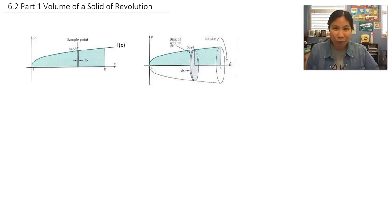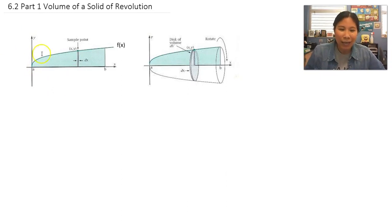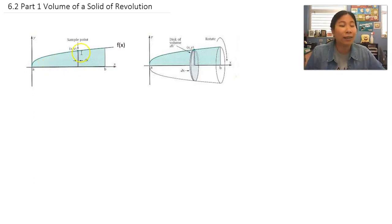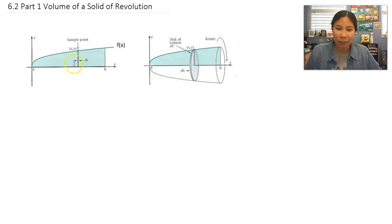A solid of revolution means we're creating this solid by doing revolutions — like rotations. I've included some pictures to help. This is what we're used to seeing: we have some graph f of x, and we've been using this to find areas, like area under the curve, which was just an integral. We used little rectangles to estimate that area.